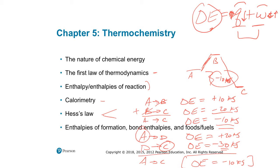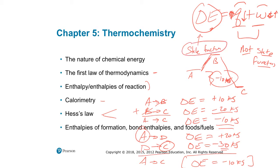The whole idea here is that Q and W are not state functions. It depends on how we carry the reaction out in terms of how much heat or work we can perform with a given reaction. You can only get so much heat or work — there's still a maximum amount depending on delta E, which is a state function, meaning path-independent. Q and W are path-dependent functions.